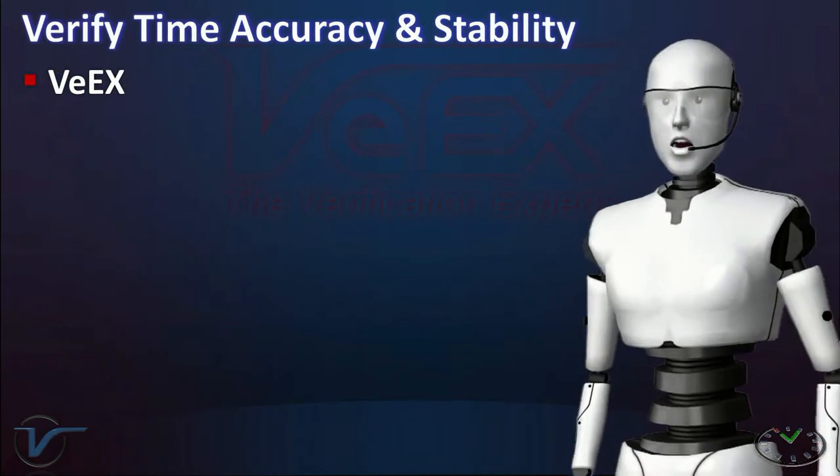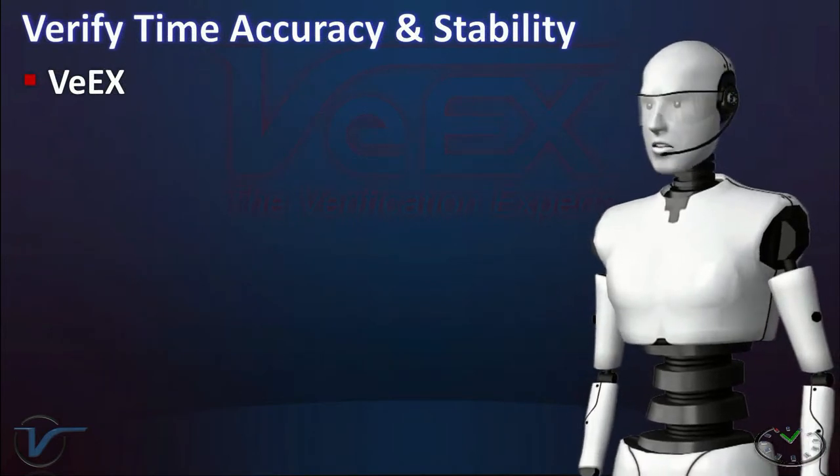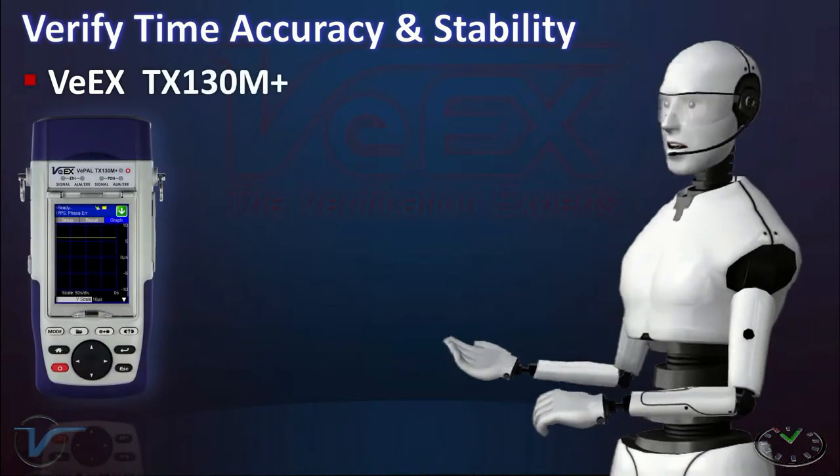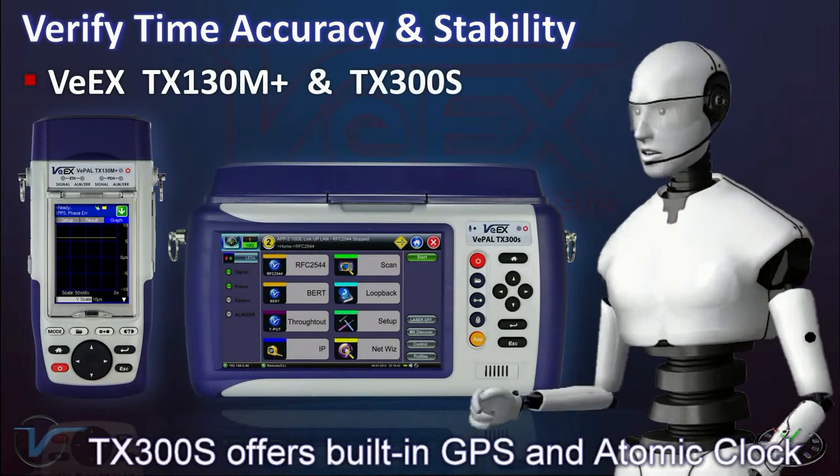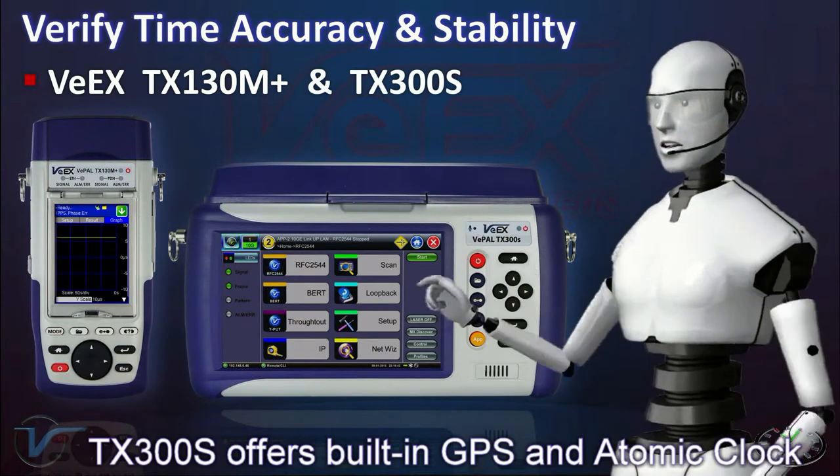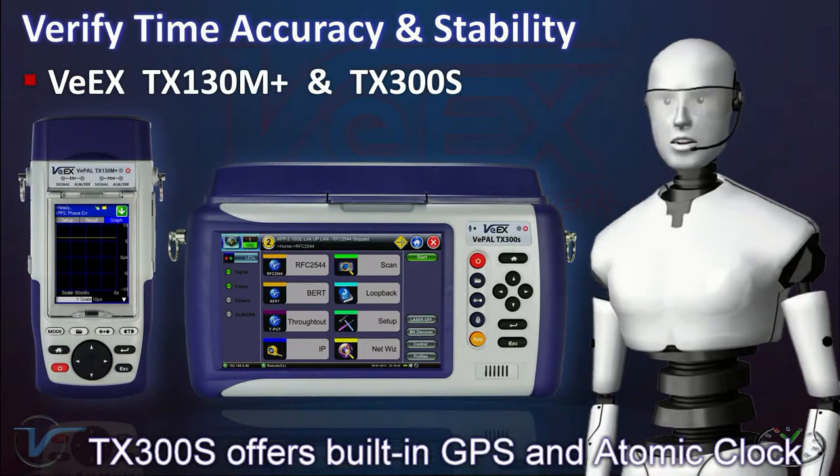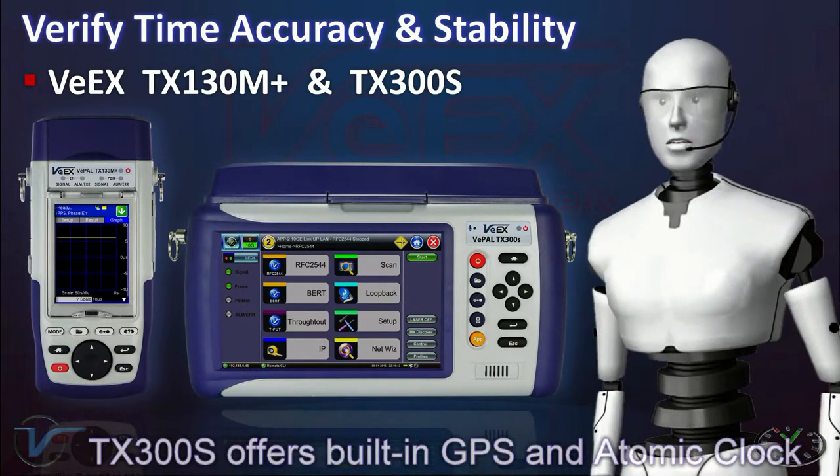How do you know if the timing is precise enough? You can use VX products, like the TX130M+ and TX300S, to compare the local one PPS signal against a GPS reference to measure the absolute phase or timing error, which indicates the accuracy.